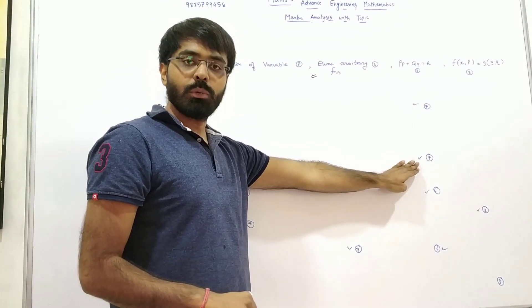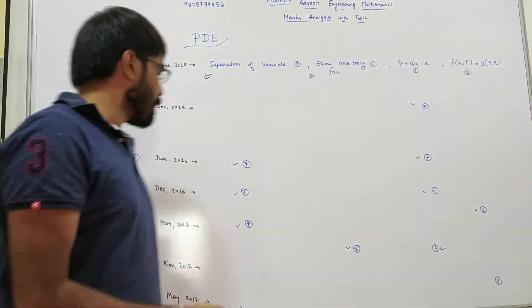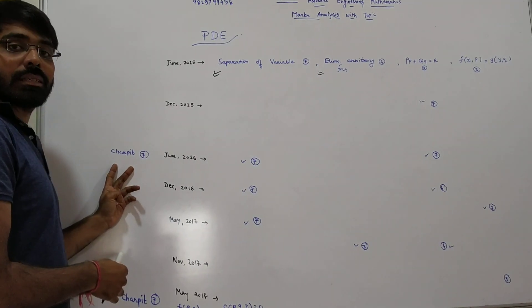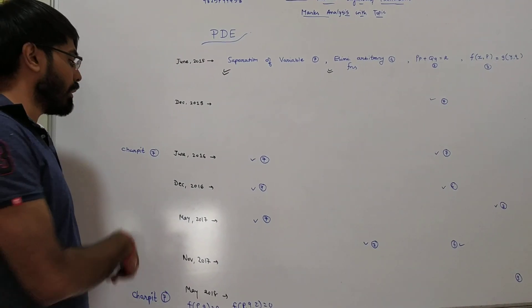We can also ask P(2) + P(p) = R — value method, 3 marks. Plus, in the chapter of 17 marks, we can ask these topics.